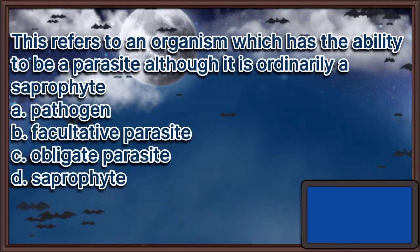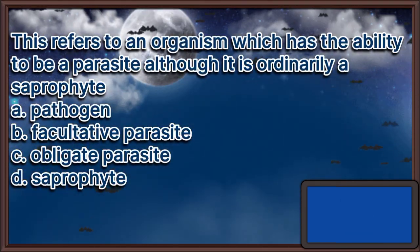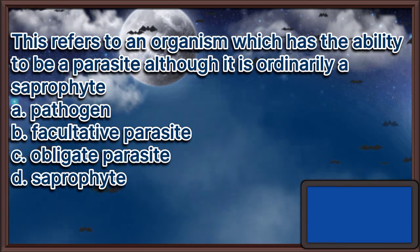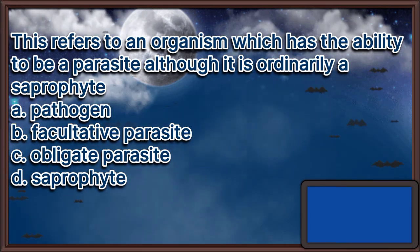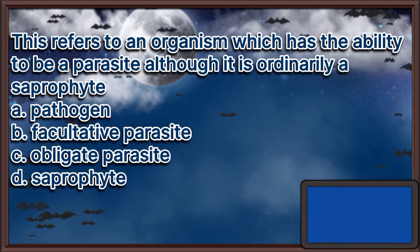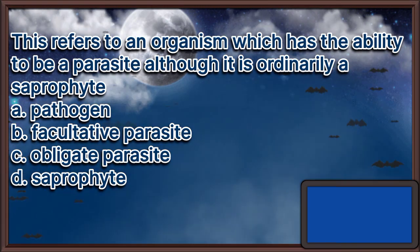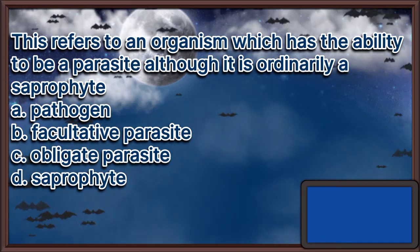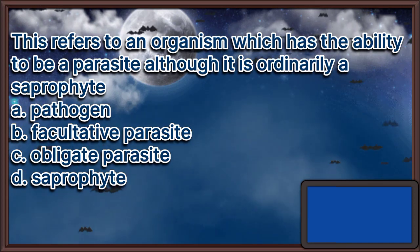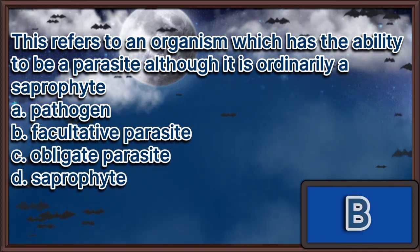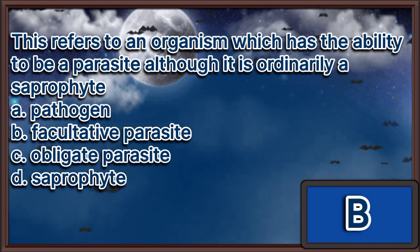This refers to an organism which has the ability to be a parasite, although it is ordinarily a saprophyte. A. Pathogen. B. Facultative parasite. C. Obligate parasite. D. Saprophyte. The answer is letter B.